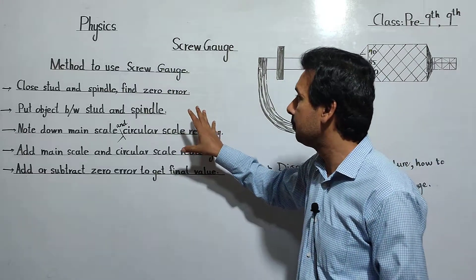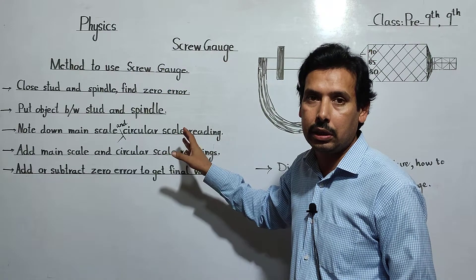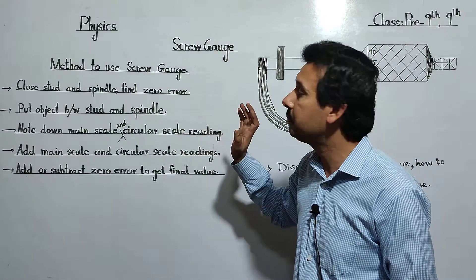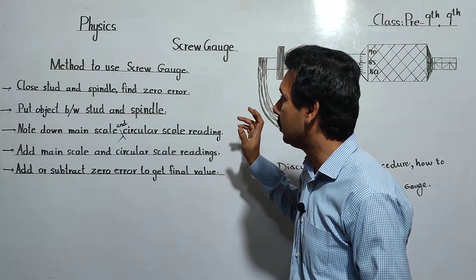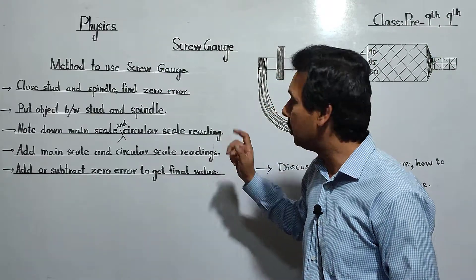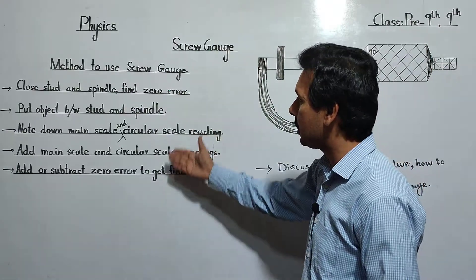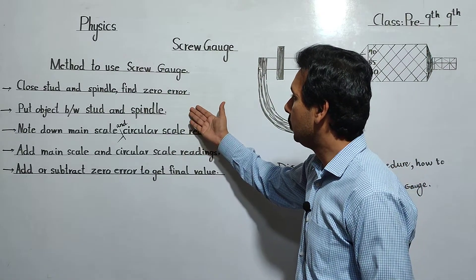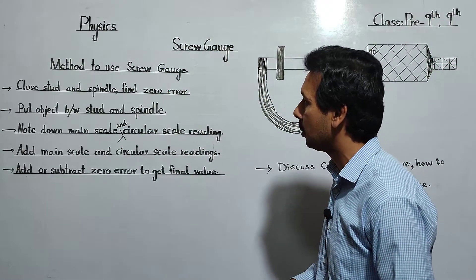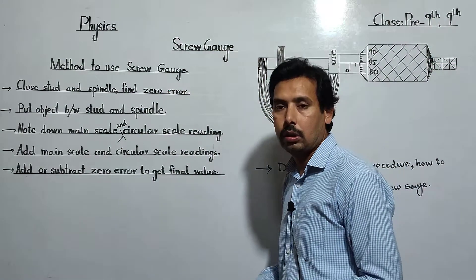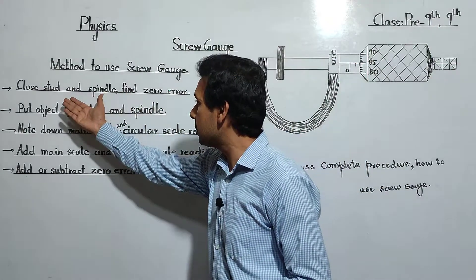In this part I am going to discuss how to use the screw gauge for finding the radius, diameter, or thickness of an object — the procedure of finding diameter or thickness with the help of screw gauge. I have written steps; these are the few steps which we follow to find the thickness or diameter of an object.